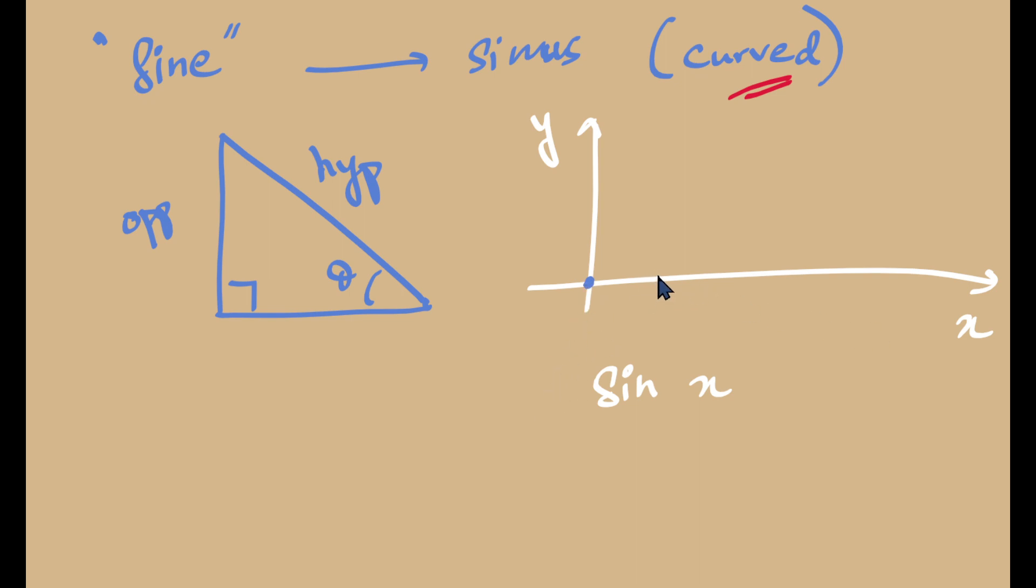So say that X is equal to 30 degrees. I'll plot the corresponding sine 30 degree value in my Y axis. So maybe it was 1 by 2 if I'm correct. So this will be plotted halfway over here. For X is equal to 30 degrees, the sine of 30 degrees would be half.